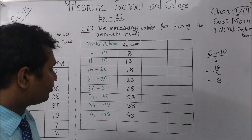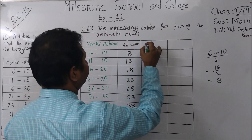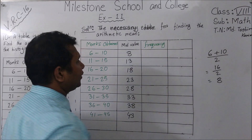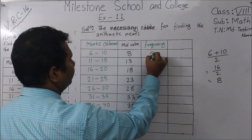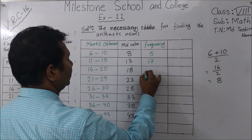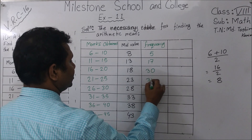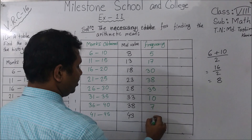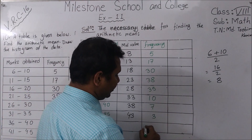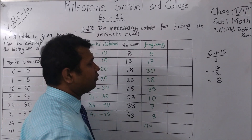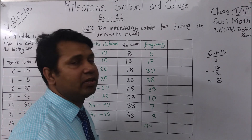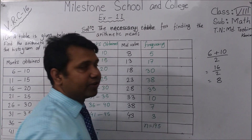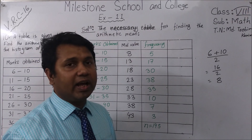Now we are going to write the frequency that is given to us. The frequencies are: 5, 17, 30, 38, 35, 10, 7, and 3. The sum of the frequencies — if you add 5+17+30+38+35+10+7+3 — you will get 145. You can use a calculator to find this.